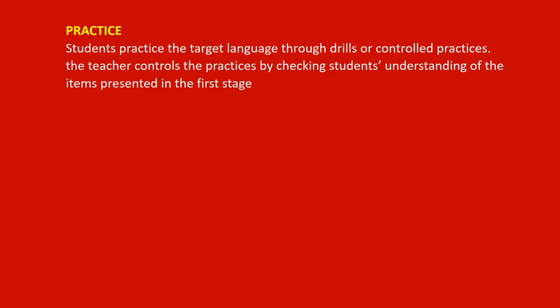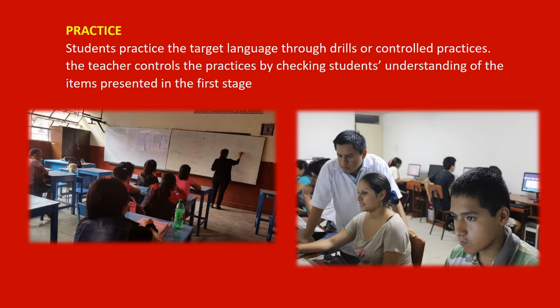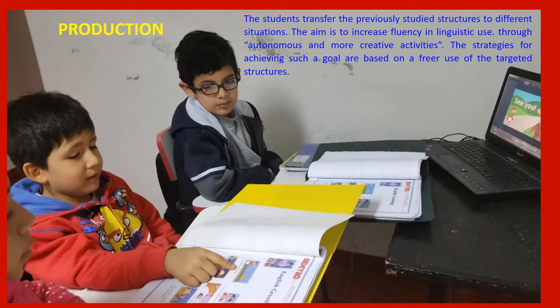In the Practice stage, students practice the target language through drills or controlled practices. The teacher controls the practice by checking student understanding of the items presented in the first stage. In the Production stage, students transfer the previously studied structure to different situations. The aim is to increase fluency in language, and students practice linguistic use through autonomous and more creative activities based on free use of the target structure.